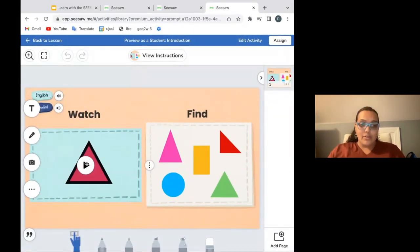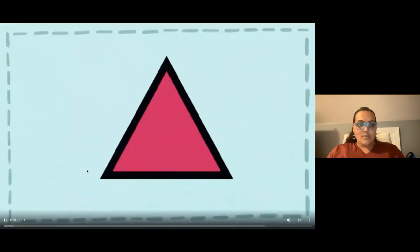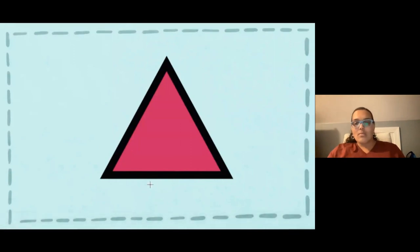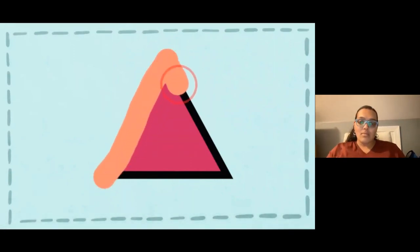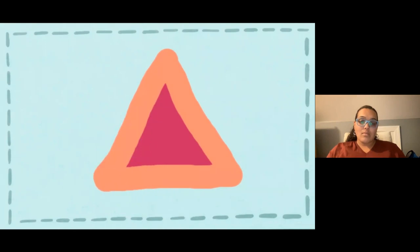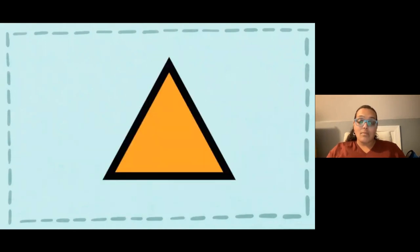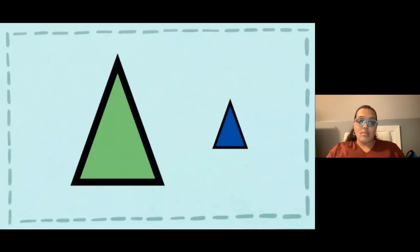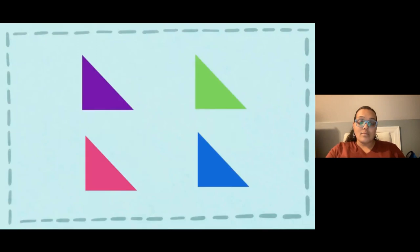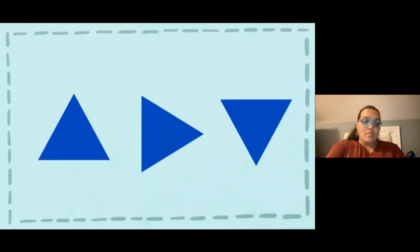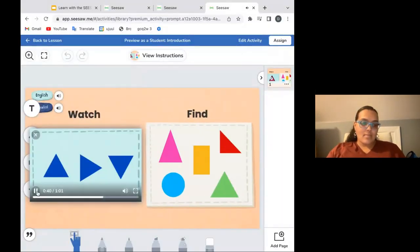This is a triangle. A triangle has three sides. One, two, three. This is a triangle. A triangle has three corners. One, two, three. Triangles can be big. Triangles can be small. Triangles can be any color. A triangle can sit on one of its sides or on one of its corners.